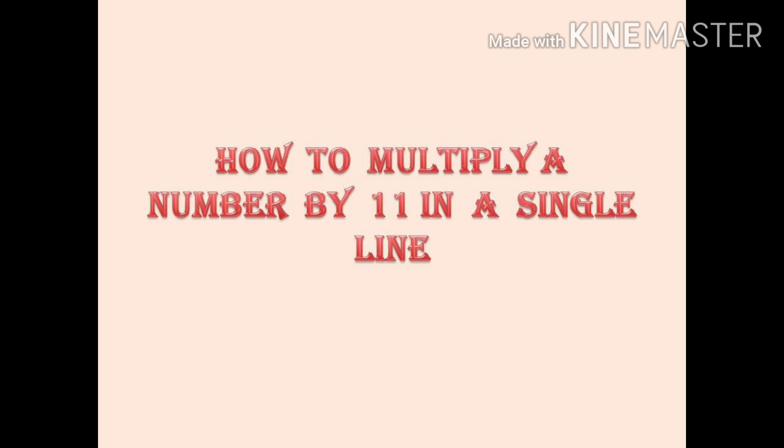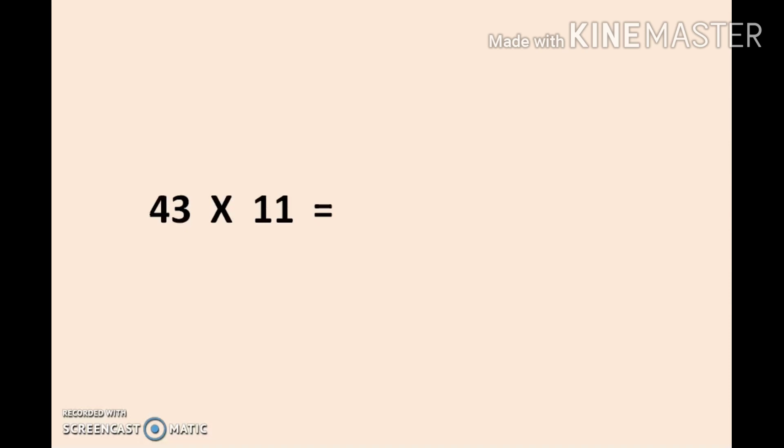Let me explain this using an example. Here we have the number 43 × 11. Before explaining the trick, I want to remind you one thing: addition, subtraction, and multiplication we do from right to left, but division only we do from left to right.